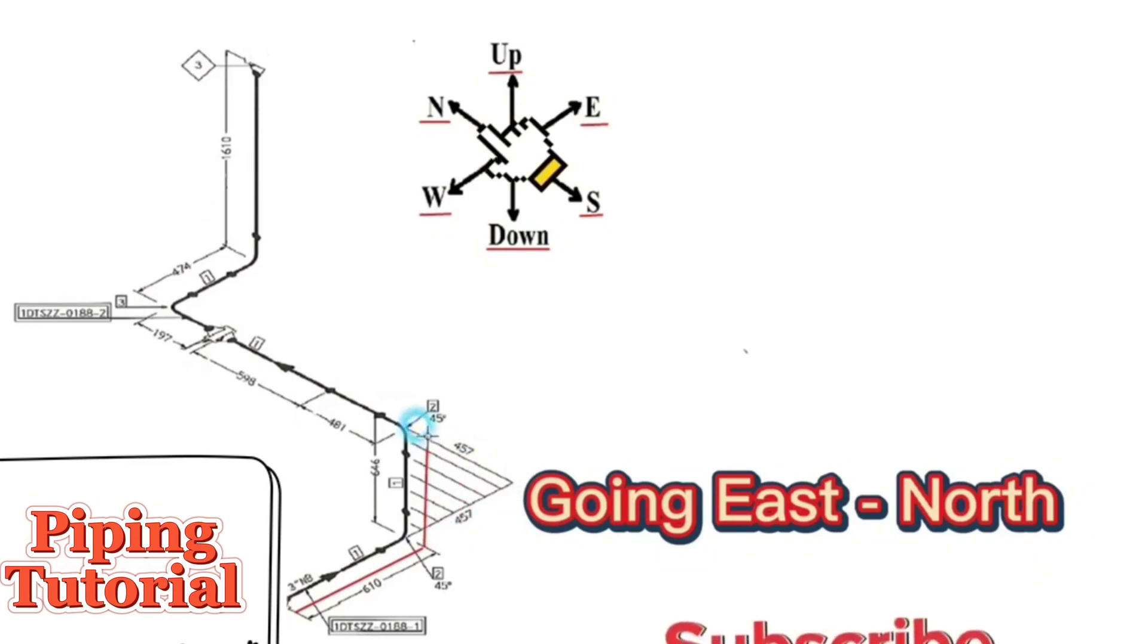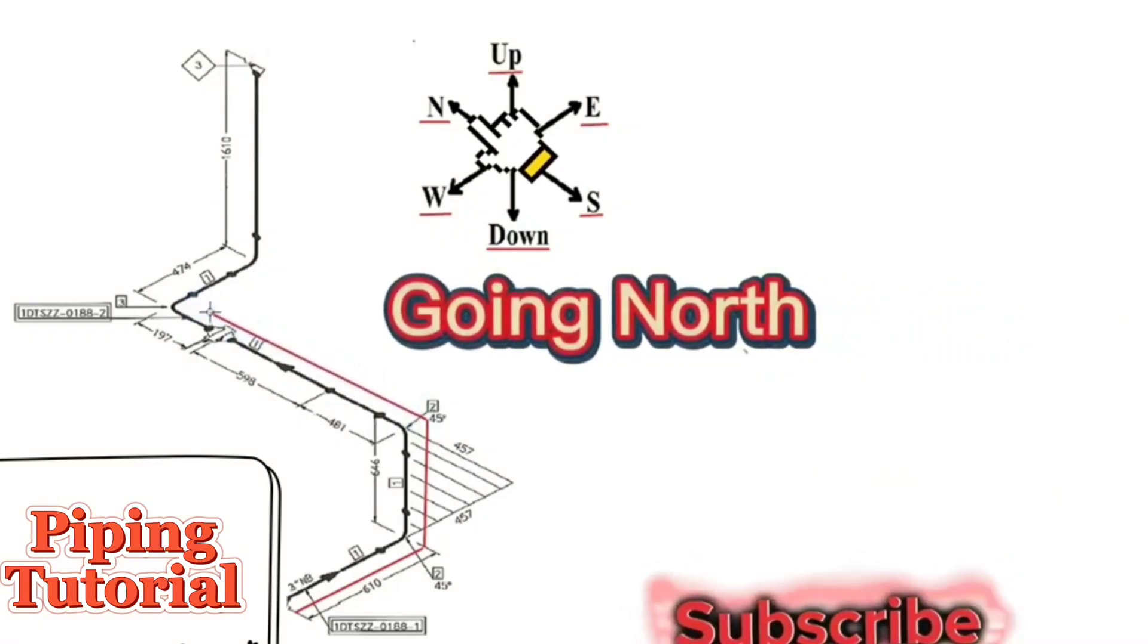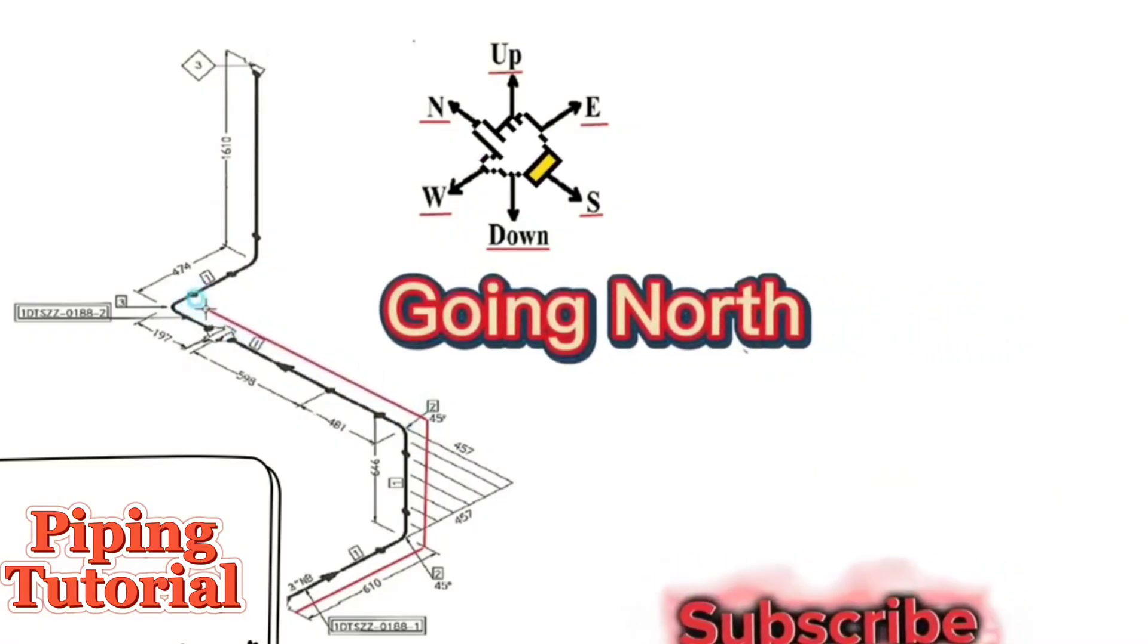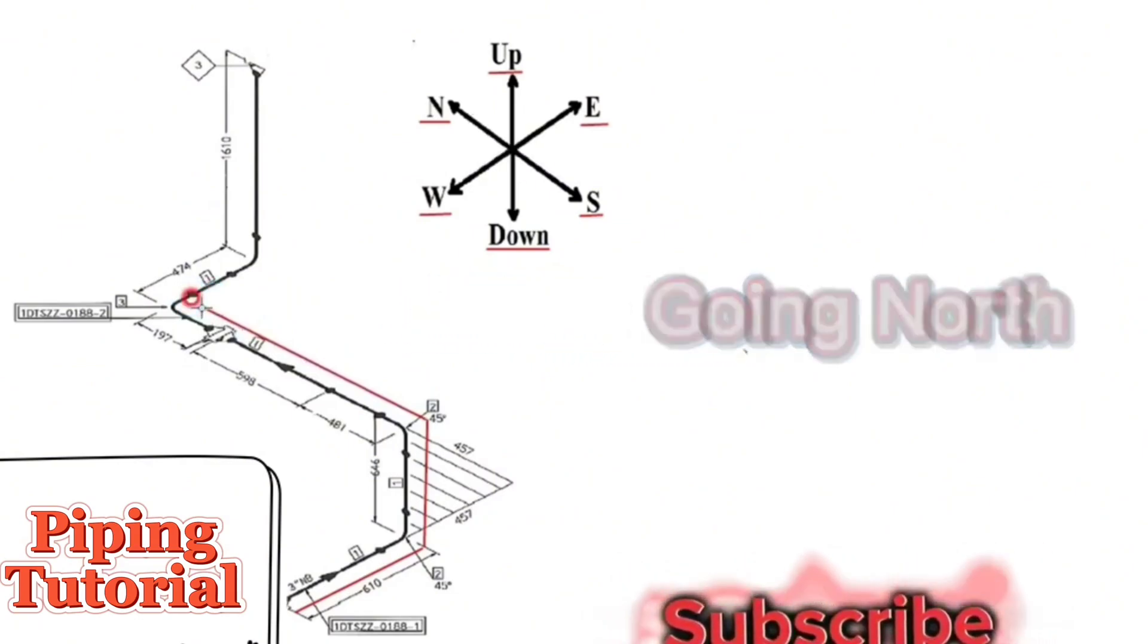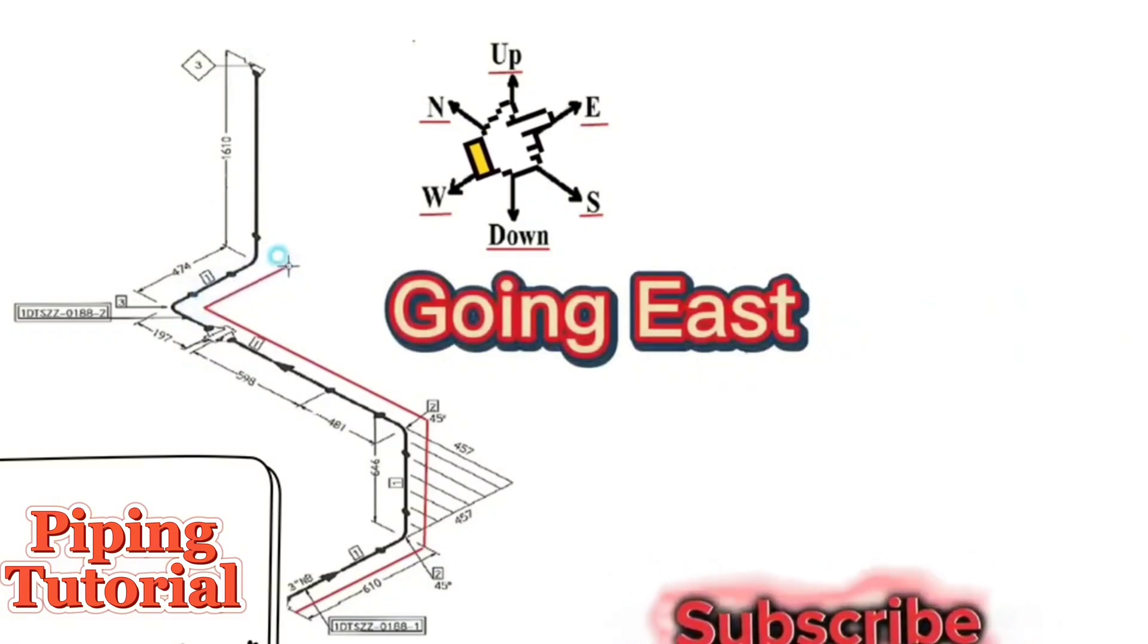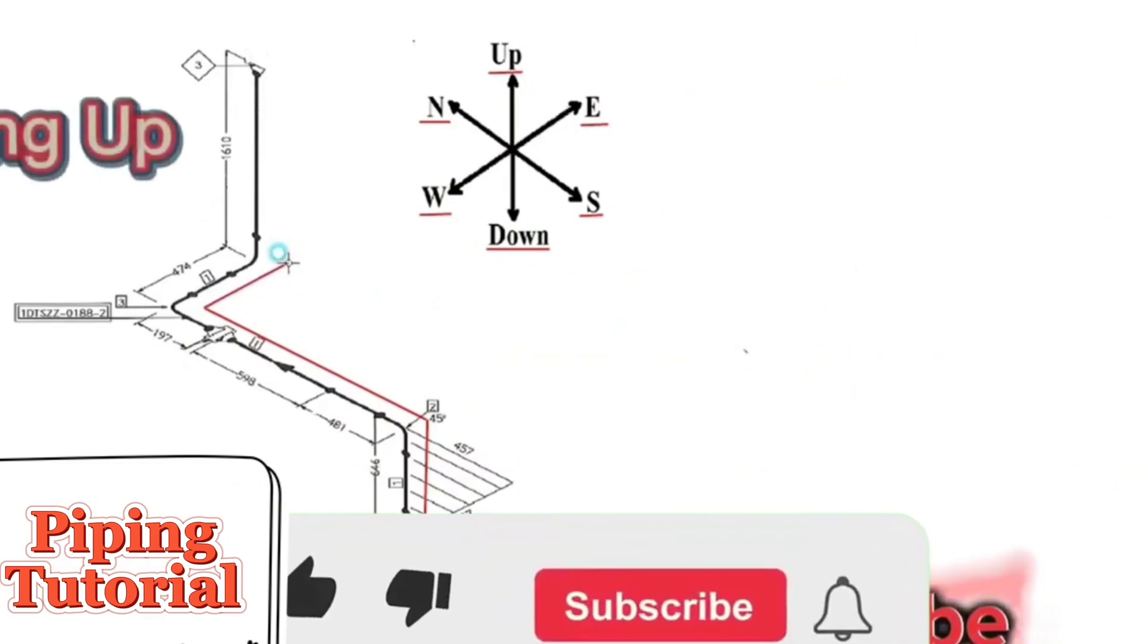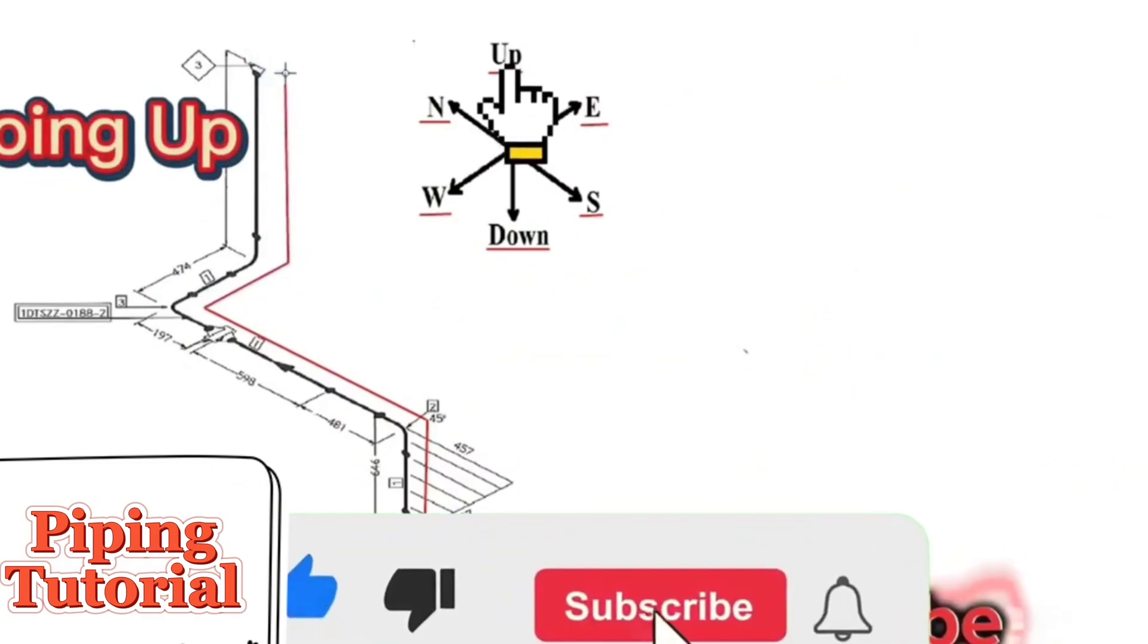Then the pipe travel continues to the north direction. In this point, the pipe travels to the east direction. Then the pipe travels continue to the up direction and the correct reading of the pipe drawing is completed.